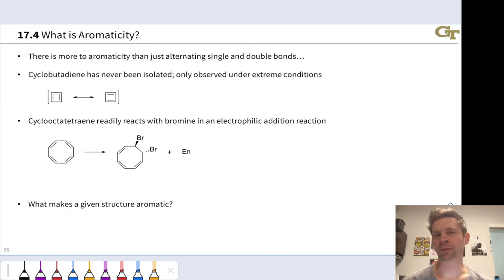Benzene is the prototypical aromatic compound, a cyclic array of six carbons with alternating single and double bonds. It's conjugated and cyclic, which might suggest that all molecules that are conjugated and cyclic with alternating single and double bonds are aromatic and enjoy the stability of benzene. This isn't the case. There's more to aromaticity than just alternating single and double bonds.